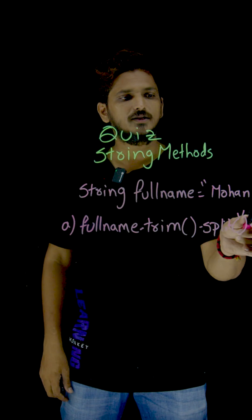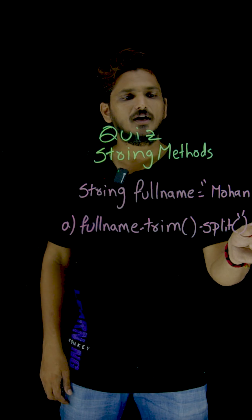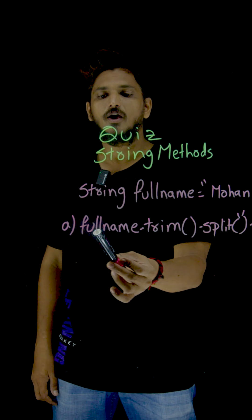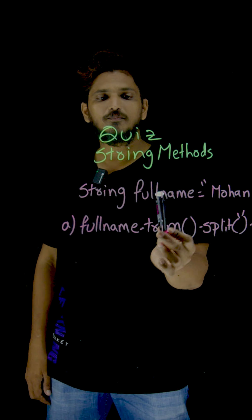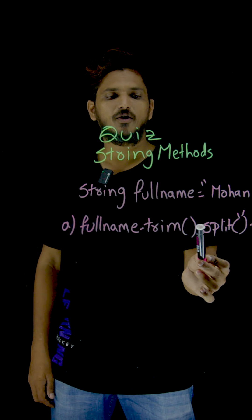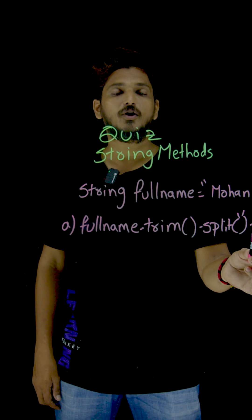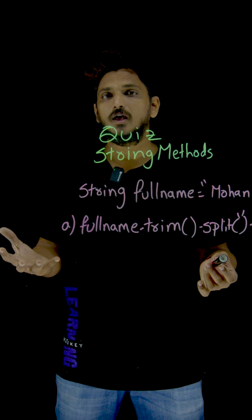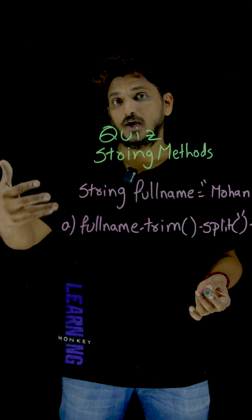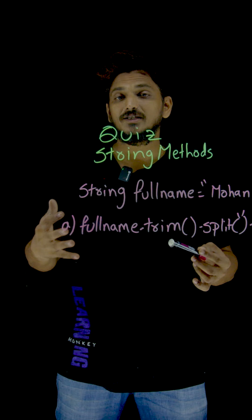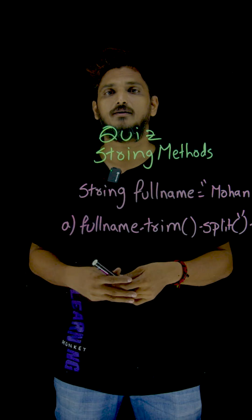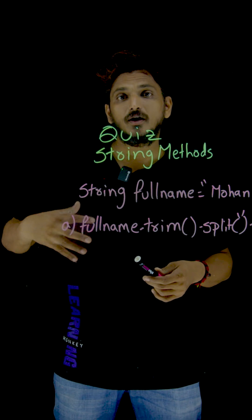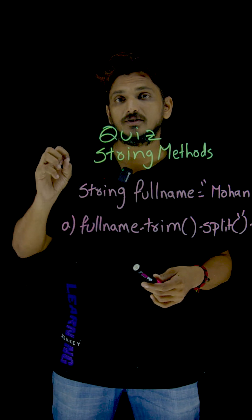Take this example: given the name 'Mohan CH', you have to identify the last name. The options are like this — one option is: fullName.trim().split(' ').last — all of these are string methods. You have to identify which one is the best choice. This is how the quiz will be, and this is the best time to build a deeper understanding of the subject.